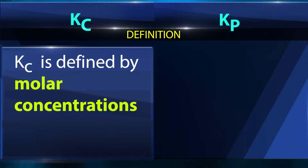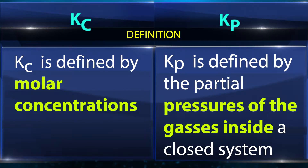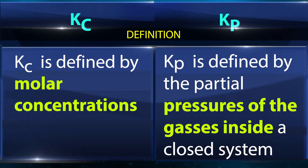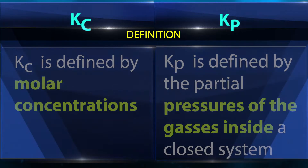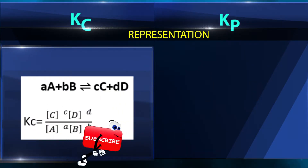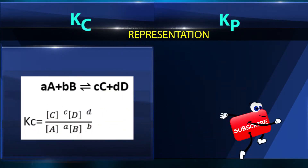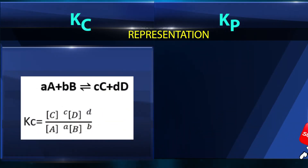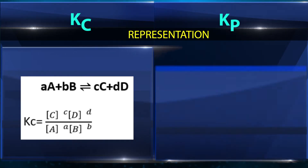Kc is defined by molar concentrations. Kp is defined by the partial pressures of the gases inside a closed system.